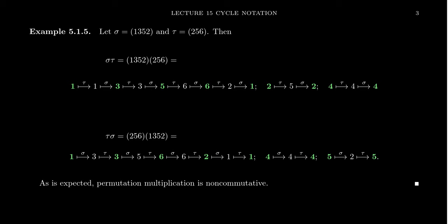Suppose we have two cycles, sigma and tau. Sigma is (1 3 5 2) and tau is (2 5 6). We can think of these as two cycles that live inside the group S₆.